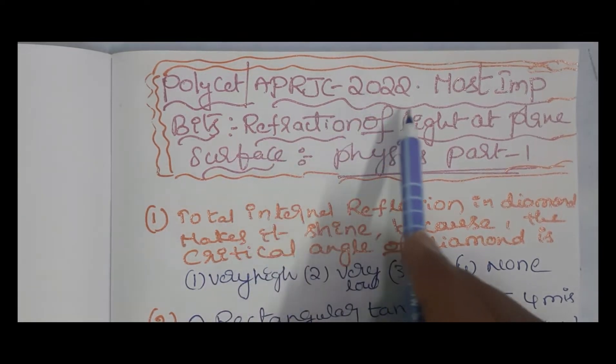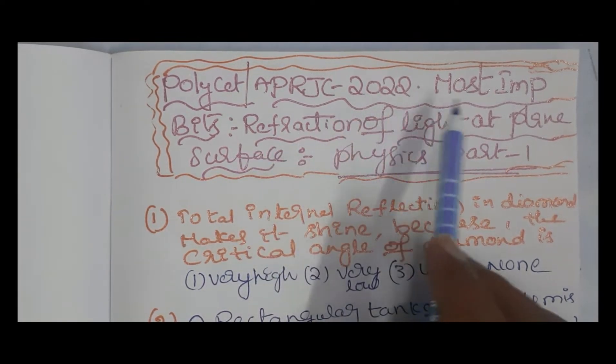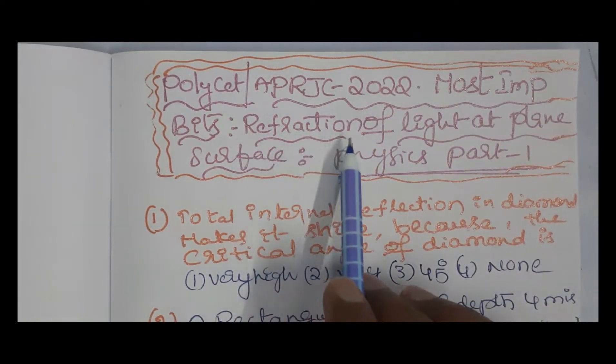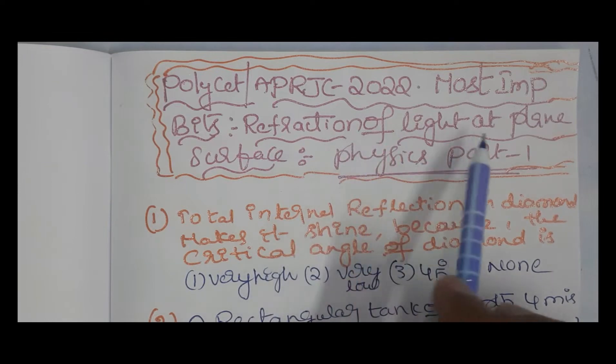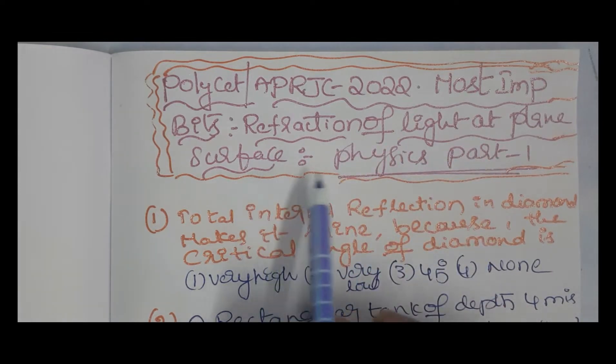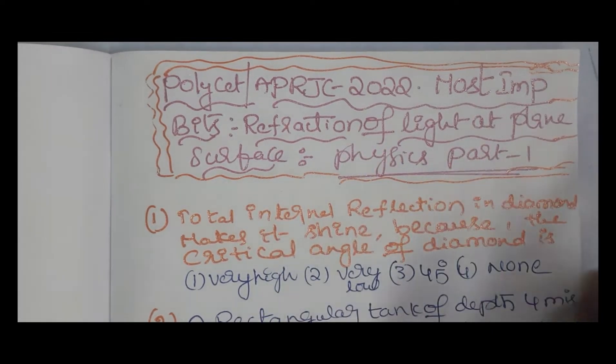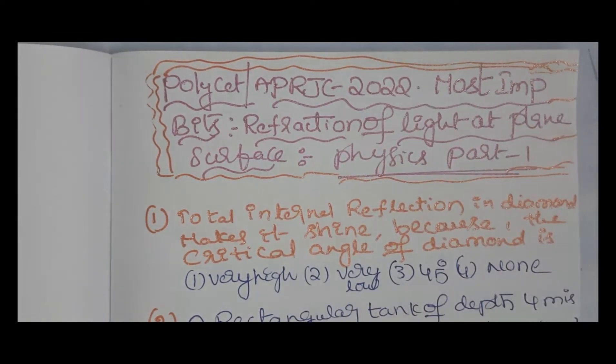Polyset APRGC 2022 most important bits in the chapter: Refraction of Light at Plane Surfaces, Part 1.